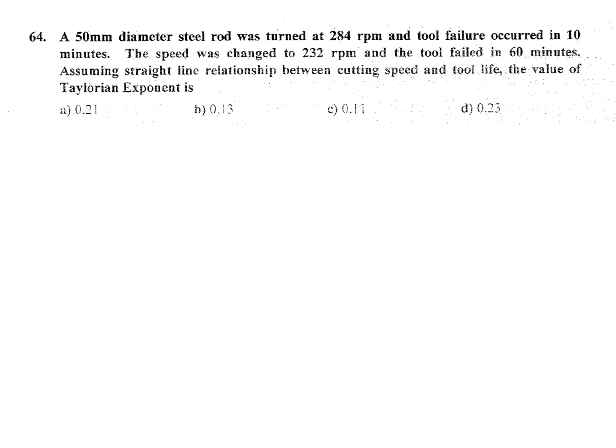A 50mm diameter steel rod has turned at 284 rpm and tool failure occurs in 10 minutes. The speed was changed to 232 rpm and the tool failed in 60 minutes, assuming straight line relationship. In ISRO examination, calculator not allowed, so it is very difficult to solve this question.